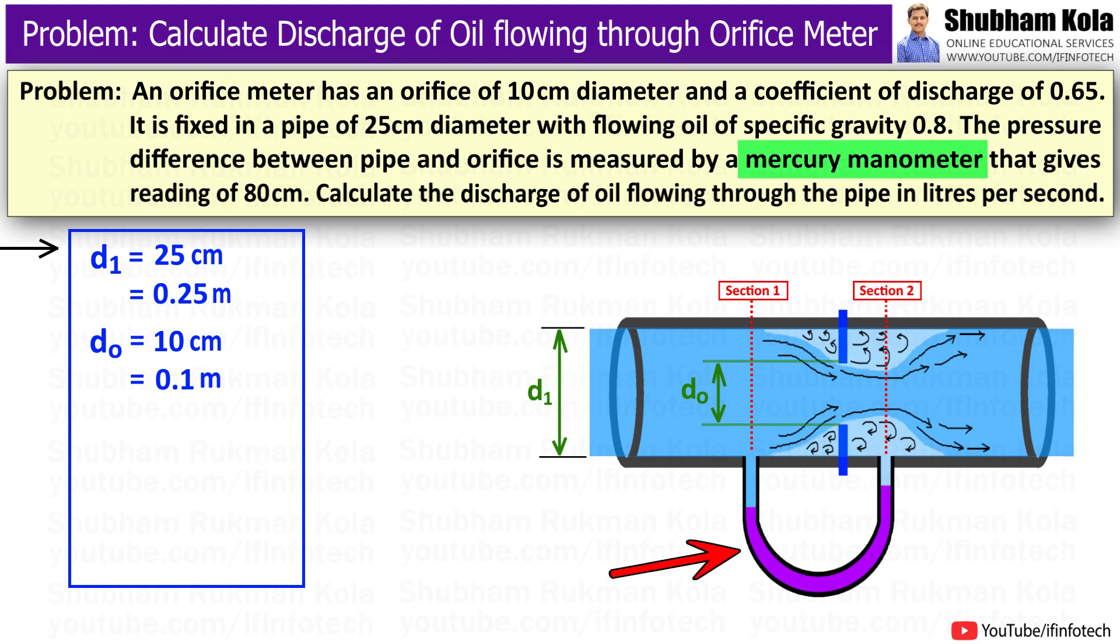The differential manometer contains mercury which gives reading of 80 cm, that is x equal to 80 cm of Hg, equal to 0.8 meter of Hg. And the value of coefficient of discharge, cd, is 0.65.